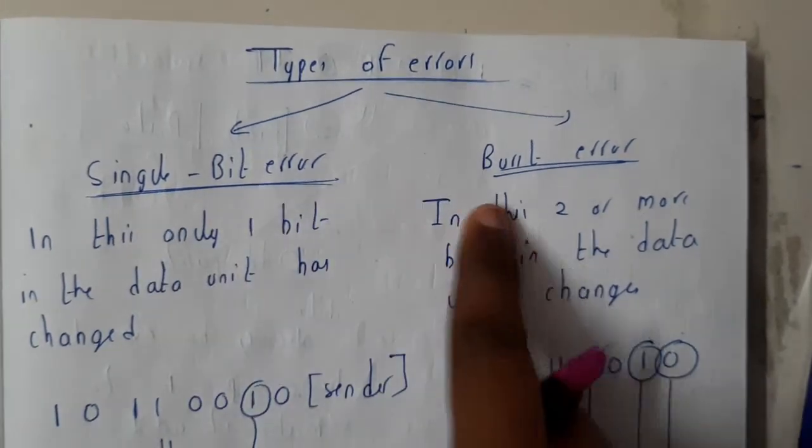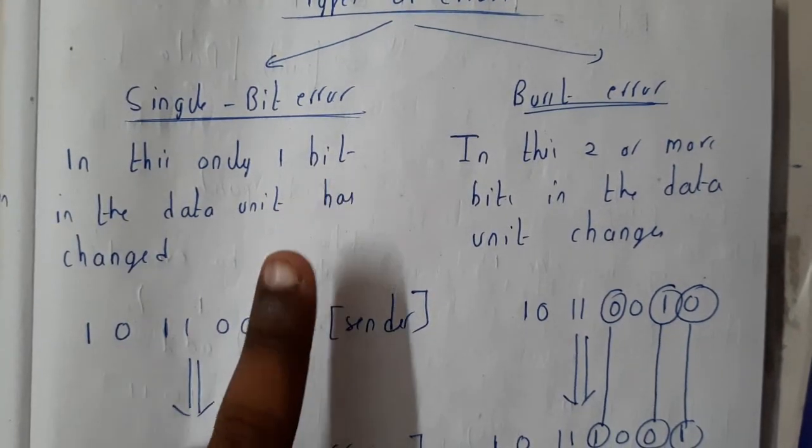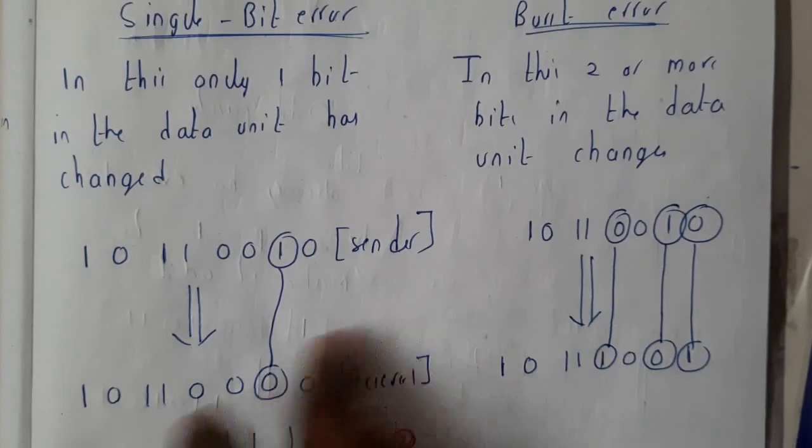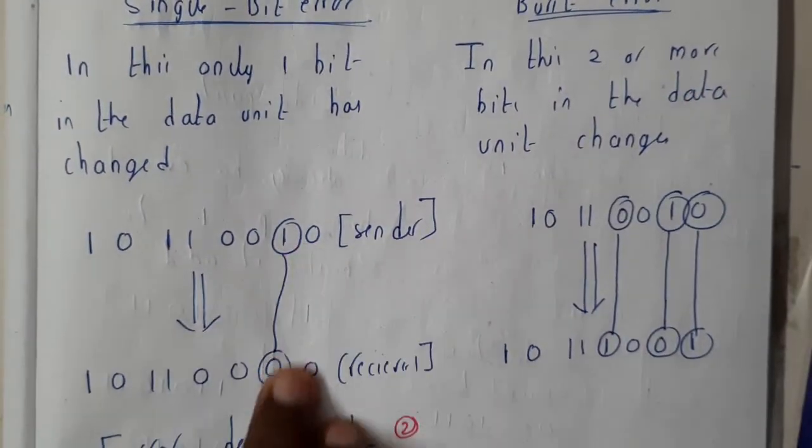Single error is when there is only a single bit change, whereas burst error is when you have multiple bits changes. Let us assume this: in single error, only one bit changes, and in burst error, two or more bits change. Here only one is changed when it comes from sender to receiver.